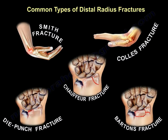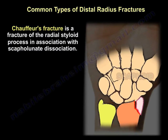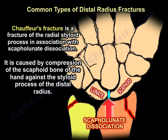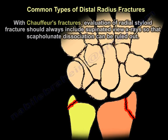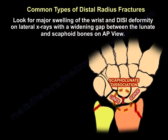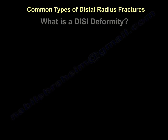The last type is the Chauffeur fracture, which is a fracture of the radial styloid process with scapholunate dissociation. It is usually caused by compression of the scaphoid against the styloid process, shearing it off, which can result in scapholunate dissociation. Evaluation should always include a supinated view of the wrist to rule out scapholunate dissociation, and look for DISI deformity on lateral X-rays and widening of the gap between the lunate and scaphoid on the AP view.